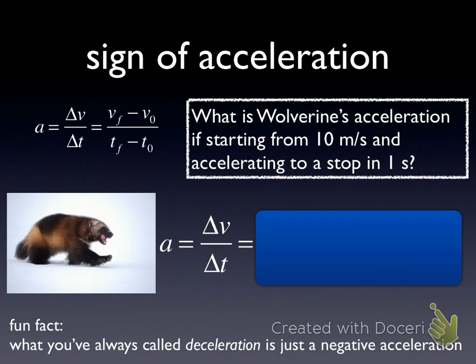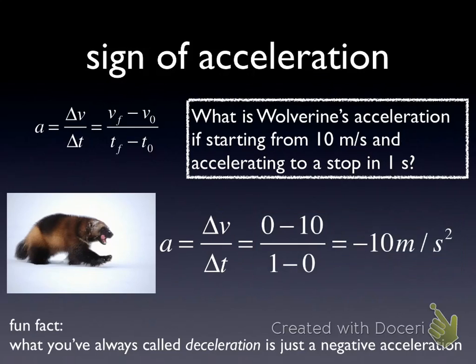How about Wolverine? He accelerates from 10 meters per second to stopping over a time of 1 second. In this case, he starts at a velocity of 10 and goes to a velocity of 0, so the acceleration is negative. By the way, a negative acceleration like this is something we might have called deceleration in a non-physics context. We don't use that word here. We'll always use negative acceleration.